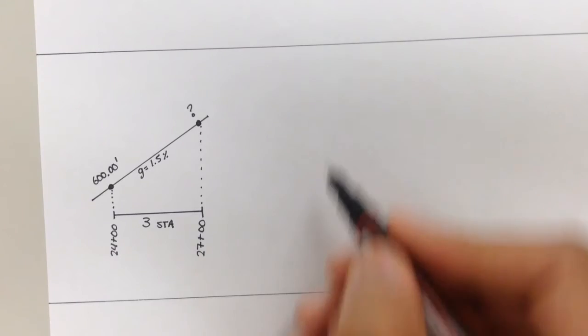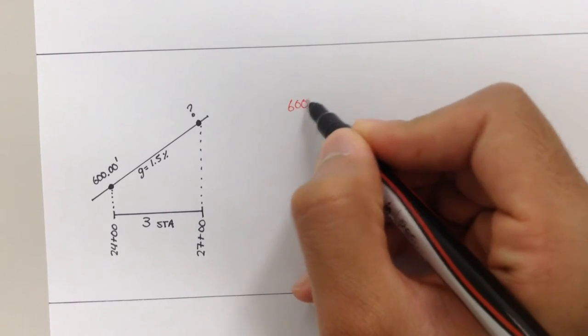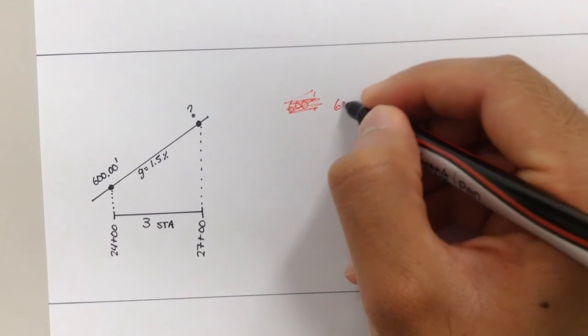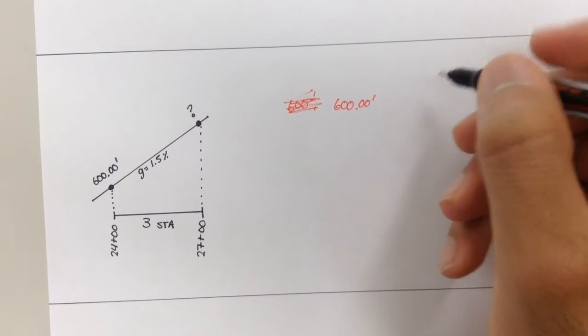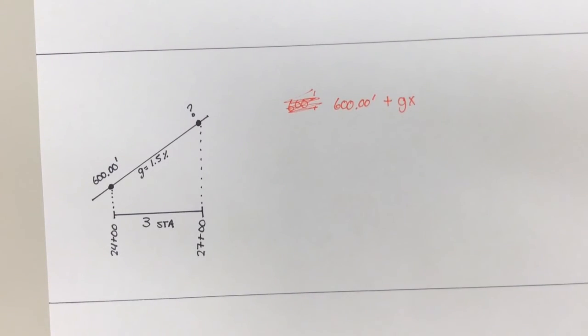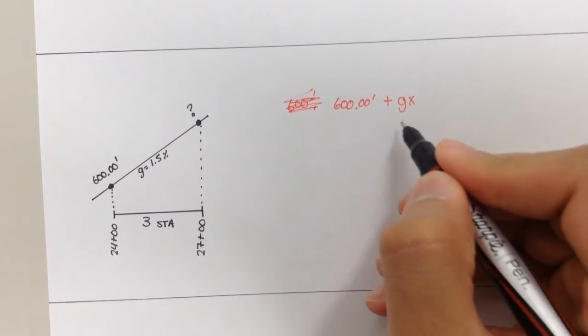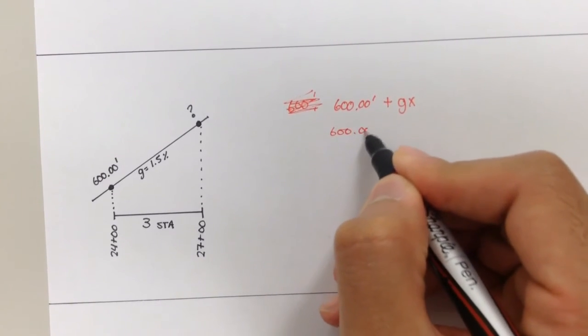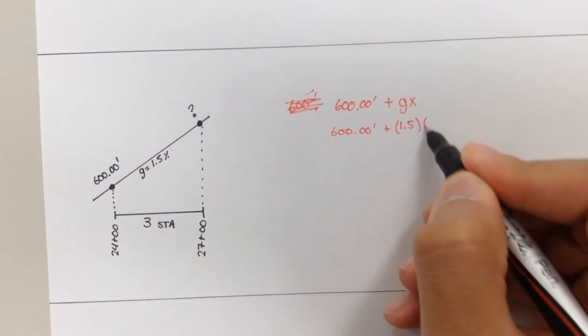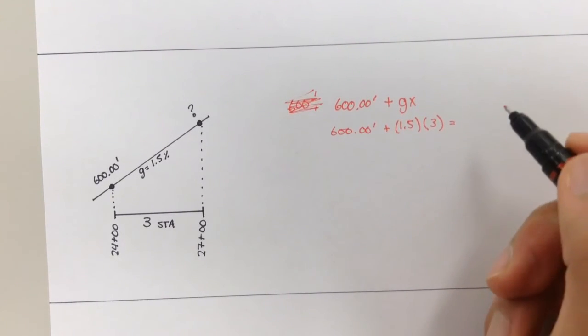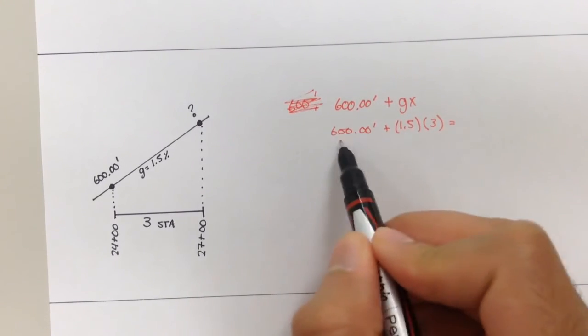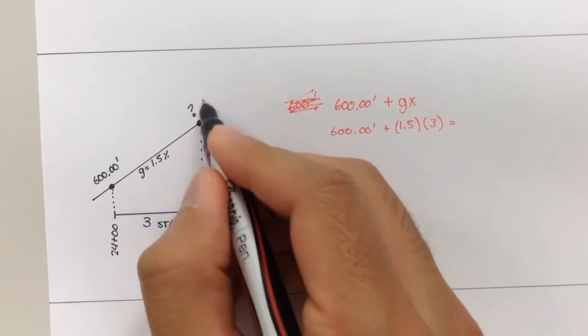So all I can simply do here is take 600.00 feet, and add GX to it, right? And our GX, well, it's 600 plus G is 1.5. X is in station, so it's three. So if I added 1.5 times three to 600, I would get the elevation of this point.